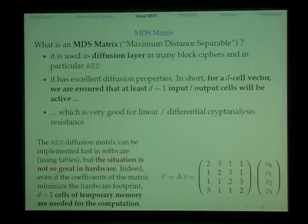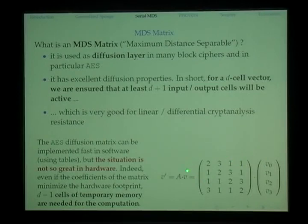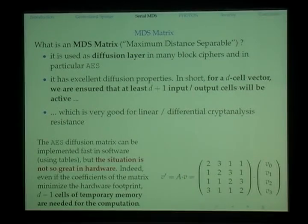The second preparation is the efficiently serially computable MDS matrix. MDS stands for Maximum Distance Separable, used in the diffusion layer of many block ciphers, particularly AES — it has excellent diffusion properties. If we have a vector with d cells and the matrix is MDS, we can ensure that in total there are d plus 1 non-zero values in v and M·v. This is especially good for resistance against linear and differential cryptanalysis.